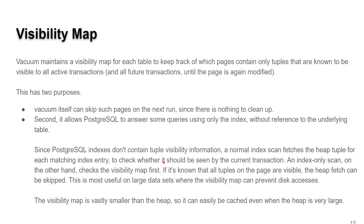So what is a visibility map? A visibility map, for each table, keeps track of which pages contain tuples that are known to be visible to all transactions — so that's the current row and anything being modified in a transaction. The older stuff is still out there taking up space, but it's not in an active list. Vacuum can take care of this. Vacuum can skip the older ones on the next run, so it knows which ones are obsolete and doesn't have to worry about them. It also allows the optimizer to do index scans on some tables — this is very, very fast.